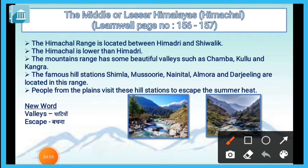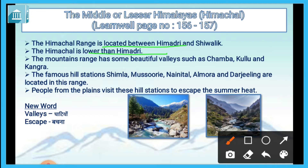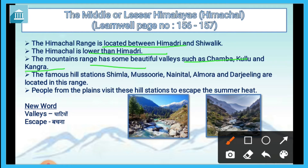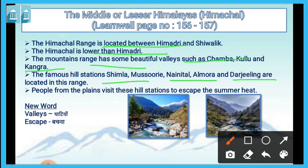The Himachal range is located between Himadri and Shivalik. The Himachal is lower than Himadri. The mountain range has some beautiful valleys such as Jamba, Kullu and Kangra. The famous hill stations Shimla, Mussoorie, Nainital, Almora and Darjeeling are located in this region.